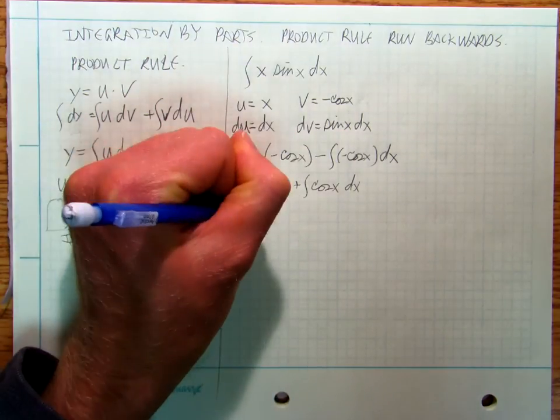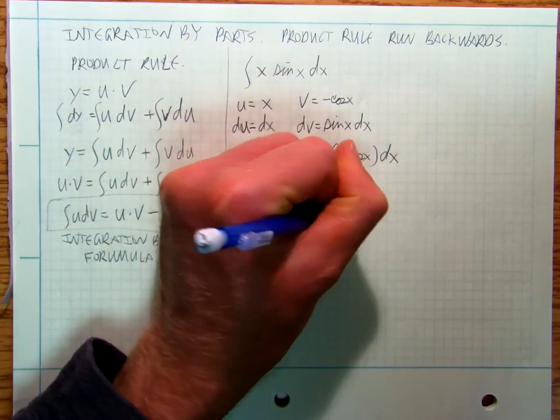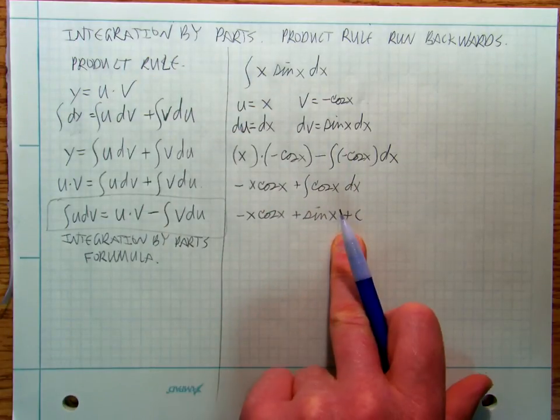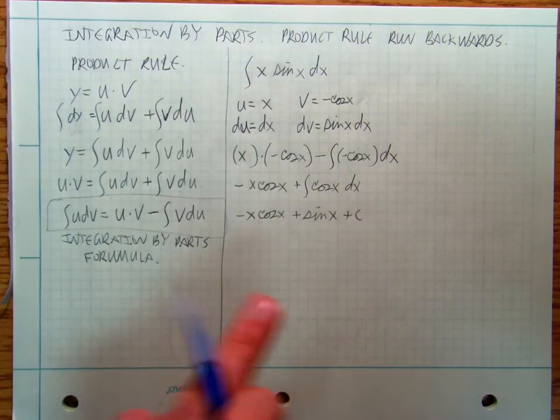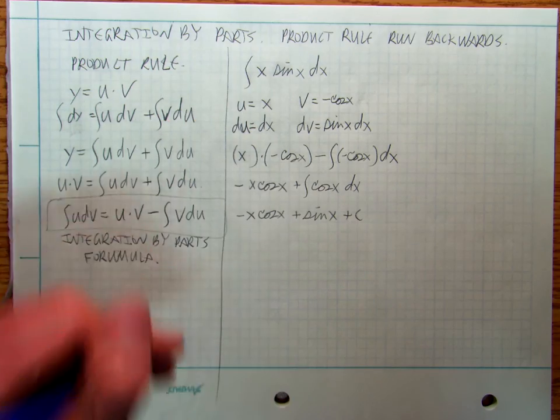So I get minus x cosine x plus sine x plus c. And now I add in my plus c, and I think that you should be able to see, you can sort of work that out on your own, why I put the plus c right there.